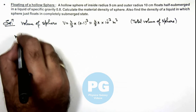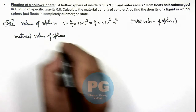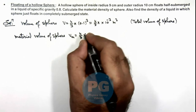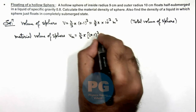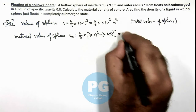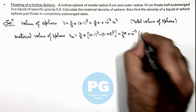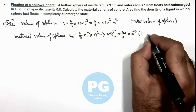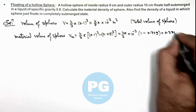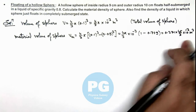Now we calculate the material volume of the sphere. The material volume is calculated by subtracting the volume of the inside cavity, so material volume is 4/3 π times (0.1³ minus 0.09³), which equals 4/3 π multiplied by 10 to the power minus 3, and inside it is (1 minus 0.9³), which is 0.729, giving 0.271 multiplied by 4π/3 into 10 to the power minus 3 meter cube. This is the material volume of the sphere.